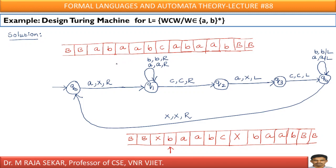As we discussed in the Chomsky Hierarchy of Languages, a Turing Machine is more powerful than pushdown automata. For this particular language, we can always construct a Turing Machine. Now we will try to understand the logic behind this particular language.